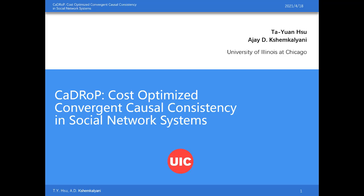Hello everyone. I would like first of all to thank the organizers of this event for inviting me here today. As you can see on this screen, our topic today is CASUAL — Causal Consistency Optimization in Social Network Systems. CASUAL stands for causal consistency under dynamic replication protocol.